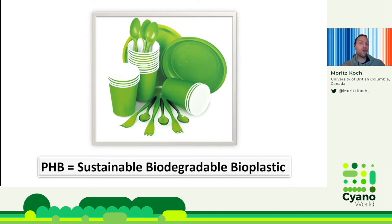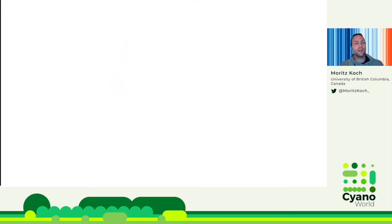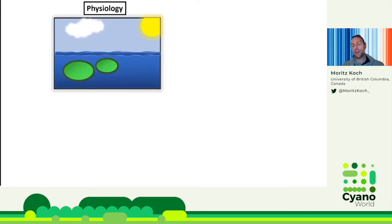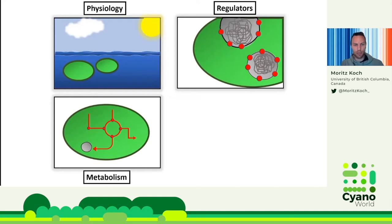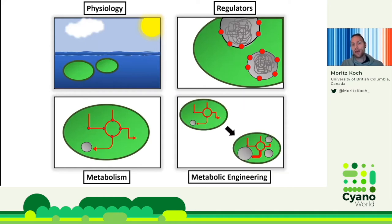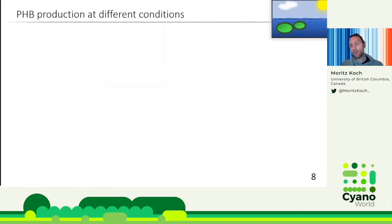My main task was to better understand PHB metabolism and then optimize production. I've subdivided my PhD results into four aspects: first, general physiology — under which environmental conditions is PHB formation favored; second, regulators — proteins involved in PHB formation; third, general metabolism — which pathways are required; and fourth, metabolic engineering approaches to create overproduction strains.